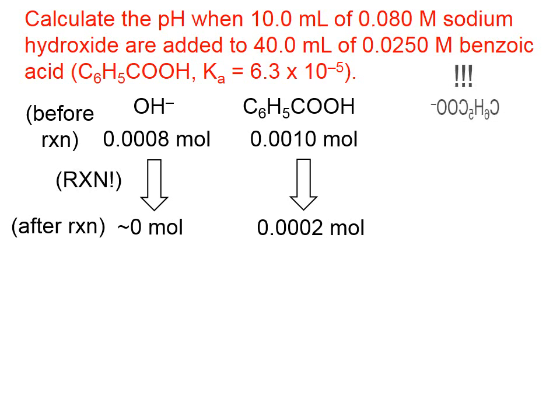Now, what we've produced sort of inadvertently is some benzoate ion. We started off with basically zero moles of that, but afterwards we have 0.0008 moles because that is what these benzoic acid molecules turn into once they've gotten their H ripped off.